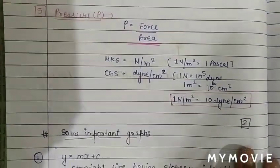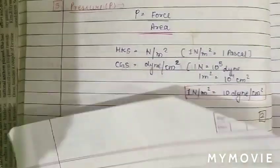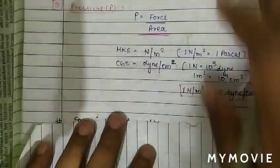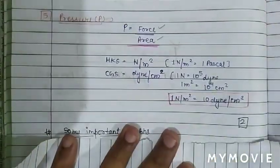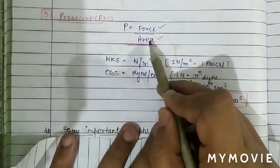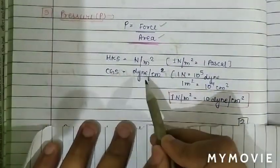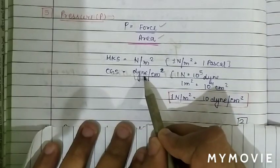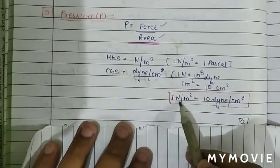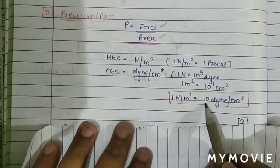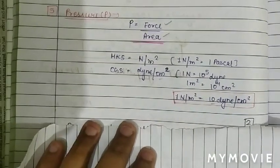The next measurable property is pressure, which is force per unit area. The MKS unit is N/m² (also called Pascal). In CGS, the unit is dyne/cm². Since 1 N = 10⁵ dyne, it follows that 1 N/m² = 10 dyne/cm². These are the five measurable properties of a gas.